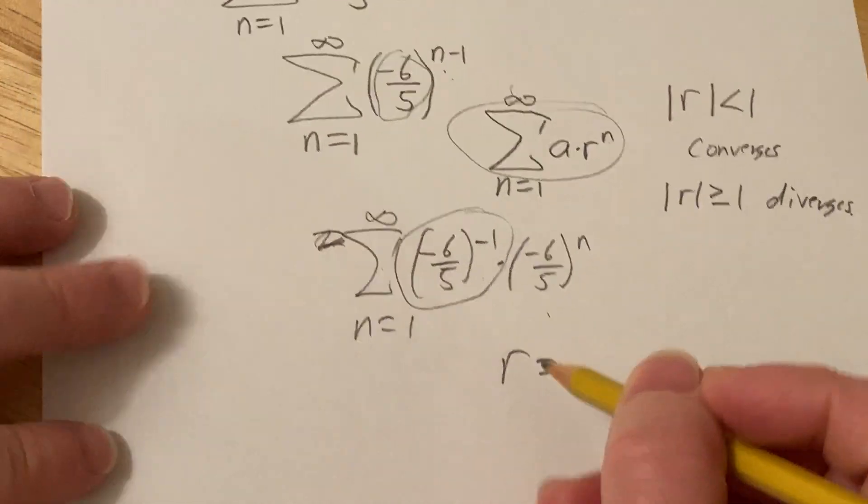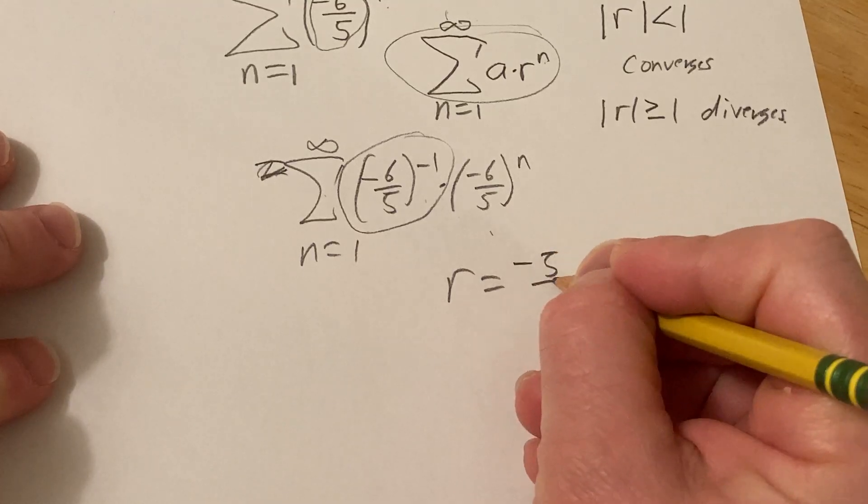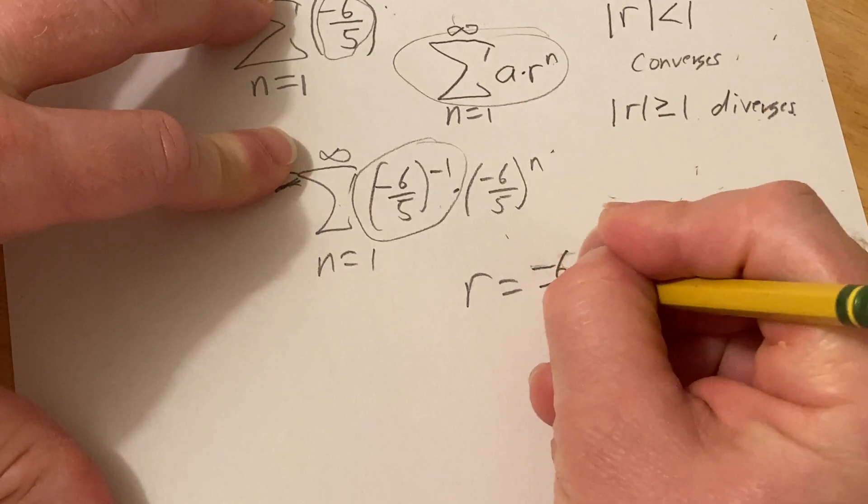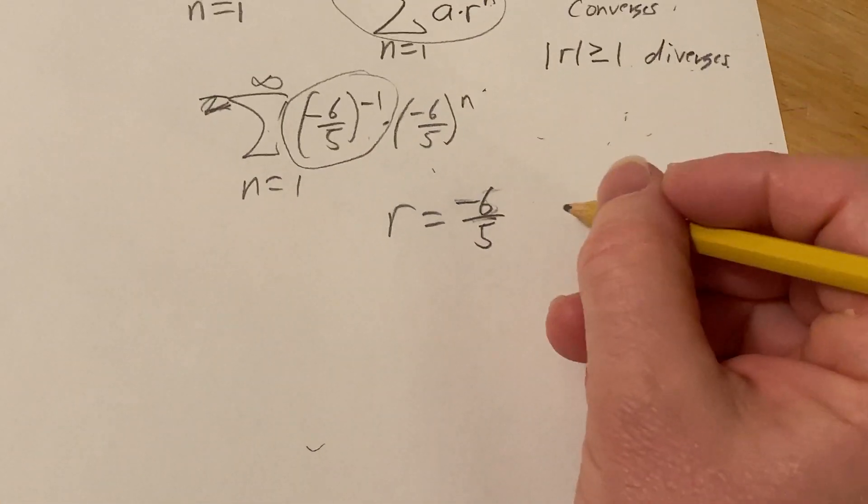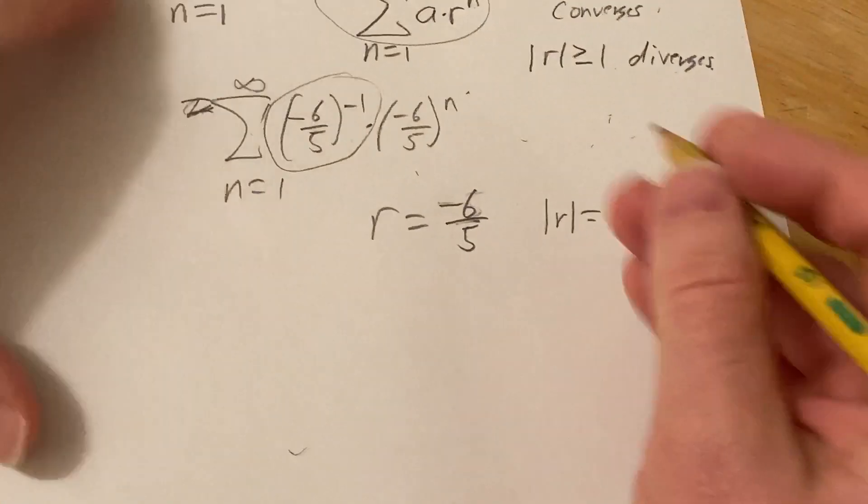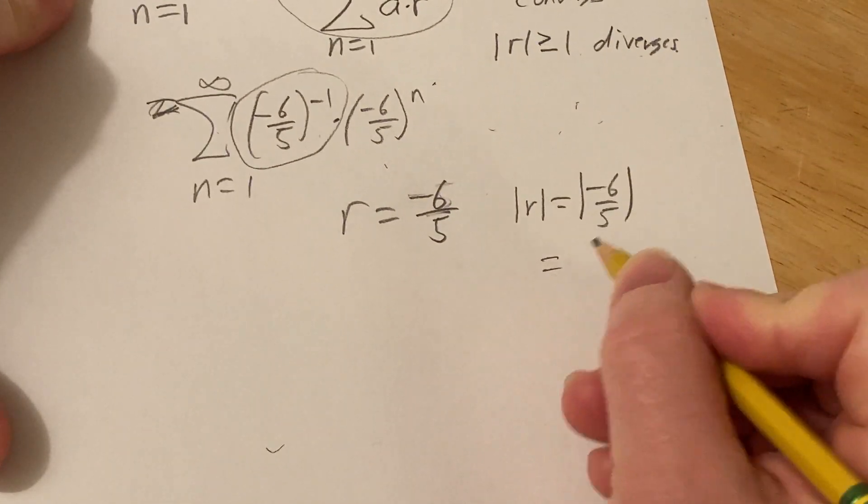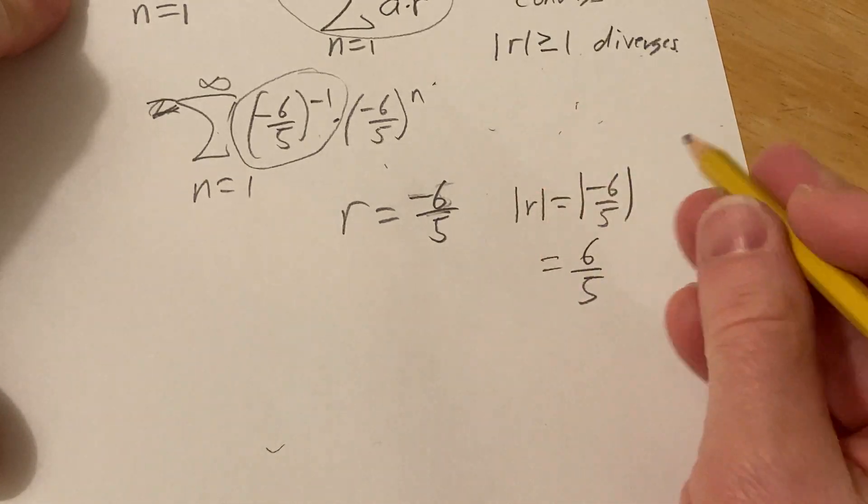So r, in this case, is negative 6 over 5. And so the absolute value of r is the absolute value of negative 6 over 5, which is equal to 6 over 5. And you can see that's greater than or equal to 1.